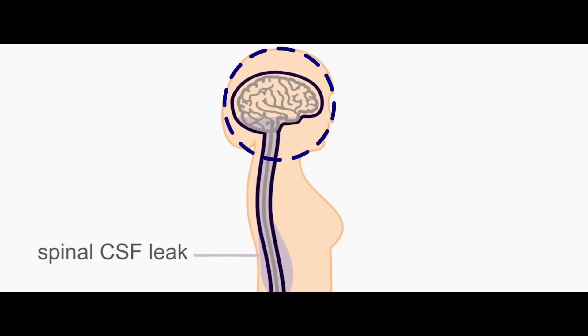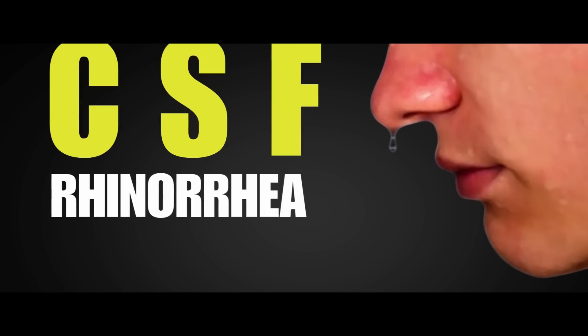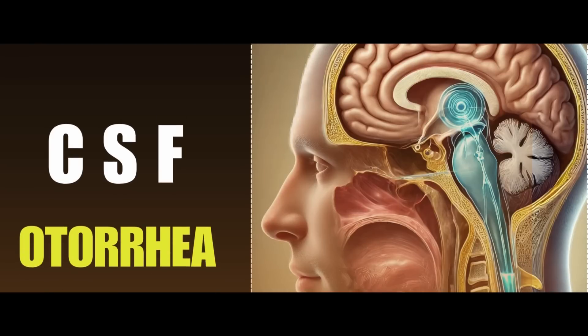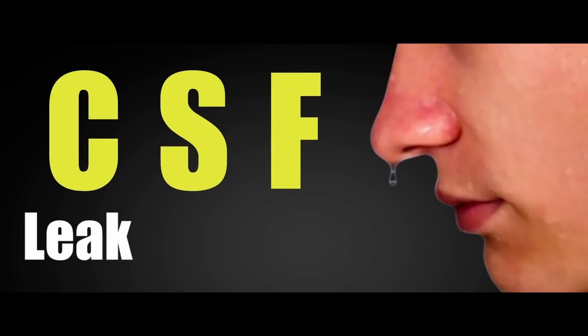So, what does CSF do? We call it the brain fluid that protects the brain and helps with shearing strains. CSF continues to circulate around the brain. It is produced, circulates, and is reabsorbed — this is the normal CSF cycle.